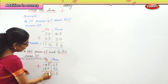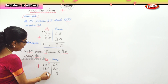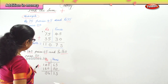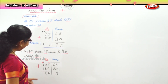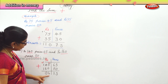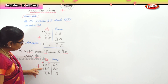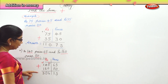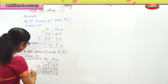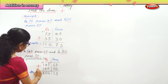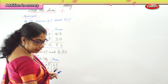In the rupees column: 5 plus 1 is 6, then 4 plus 6 is 10 — put a 0 and carry 1 again. Then 1, 2, 3 — so our answer is 306 rupees and 15 paise. Our answer is 306 rupees 15 paise.